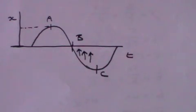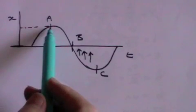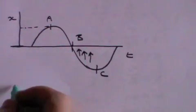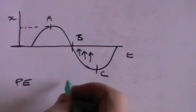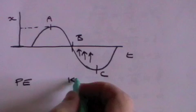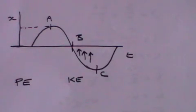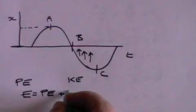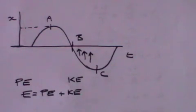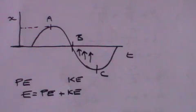At point a, the particle has its maximum potential energy but no kinetic energy. At point b, the particle has no potential energy but maximum kinetic energy, because it has maximum velocity. The combined total of potential energy and kinetic energy is a constant. As the particle travels along the sine wave, there is a transfer between kinetic and potential energy.